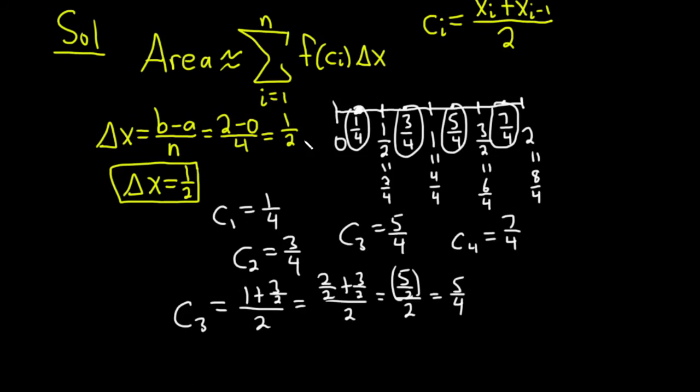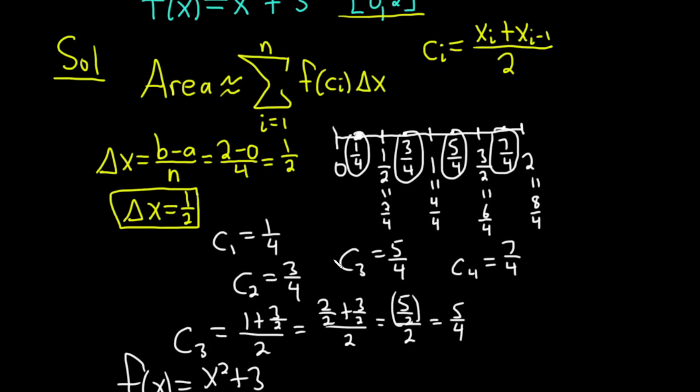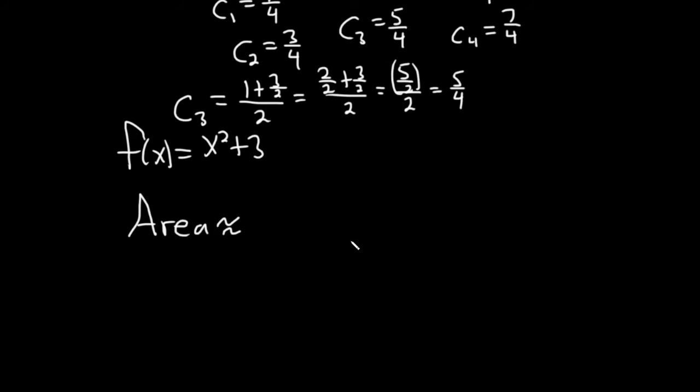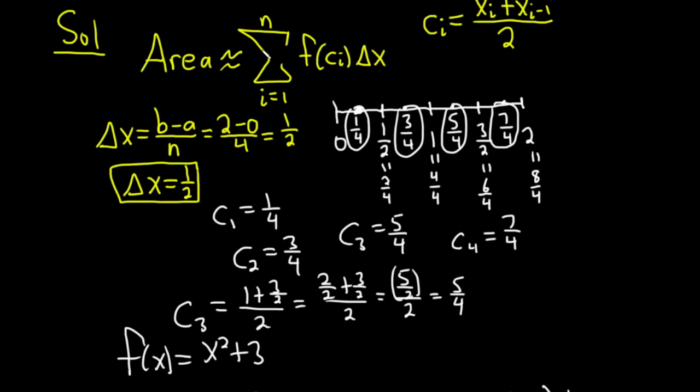Okay. So f of x here was x squared plus three. So I'm going to write that down again. So f of x is x squared plus three. And so our area is approximately equal to the function value at the midpoint times delta x. So we're adding them all up. So it'll be f of one fourth plus f of three fourths plus f of five fourths plus f of seven fourths. And all of that is being multiplied by delta x, which was one half. So it's still pretty messy, even for a simple problem like this. So you have all of the f of c sub i's and you're adding them up.